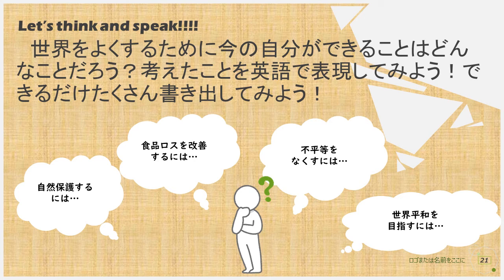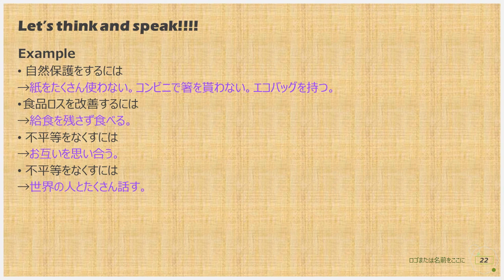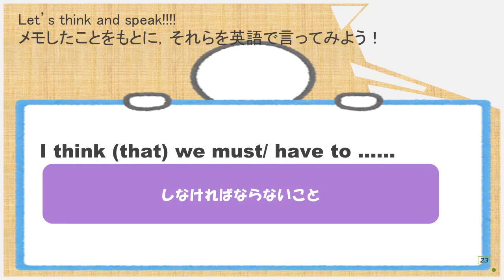As a final summary, think about what you can do right now to make the world a better place. Consider: How can we reduce food loss? How can we eliminate inequality? How can we achieve world peace? How can we protect nature? These are examples of ideas — you can use my ideas again. Did you make a memo? If you're ready, please tell me your opinion.